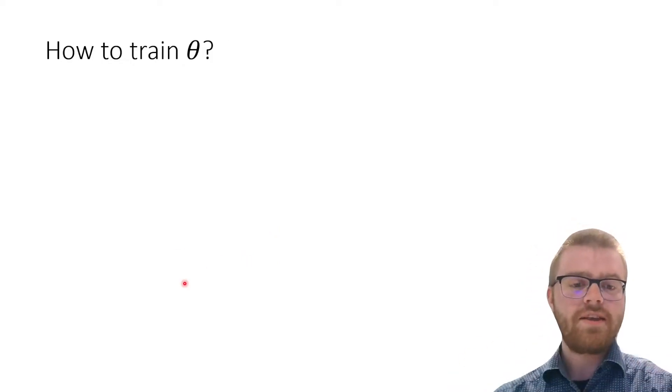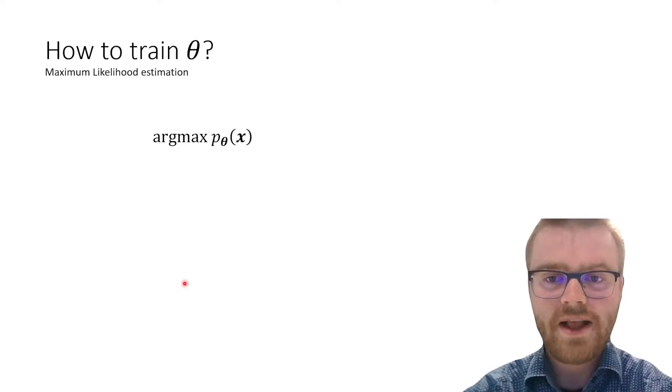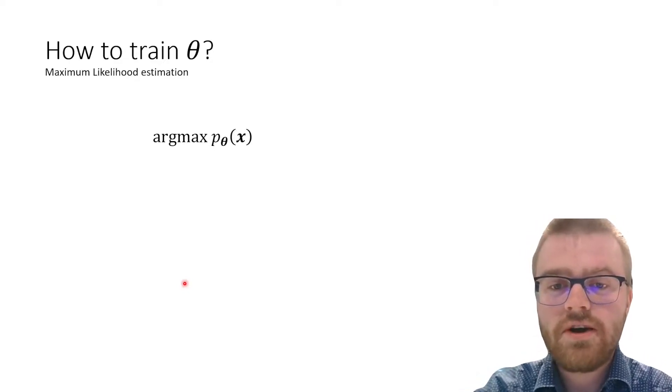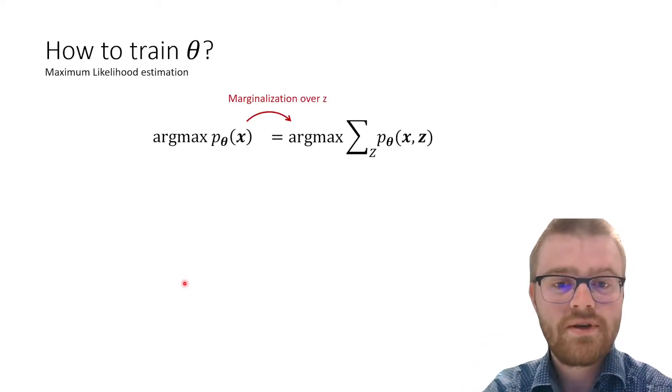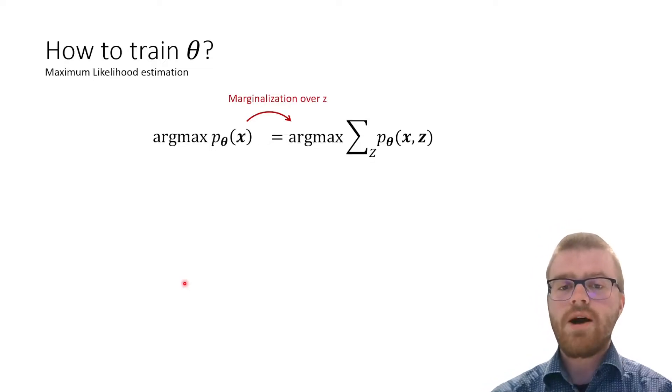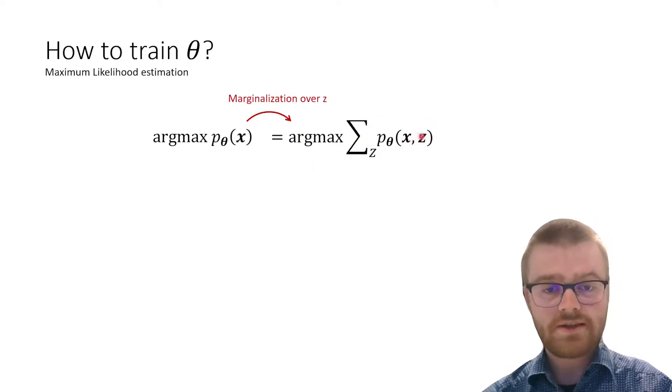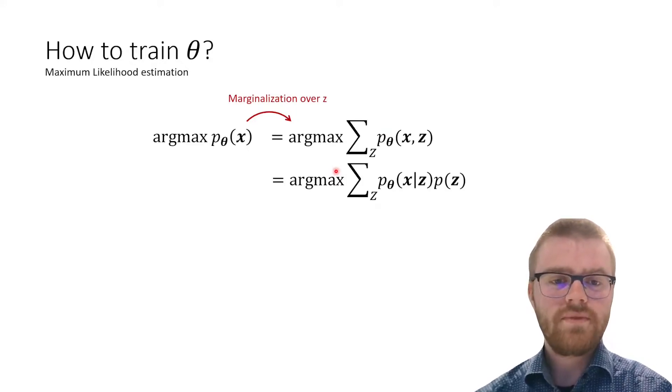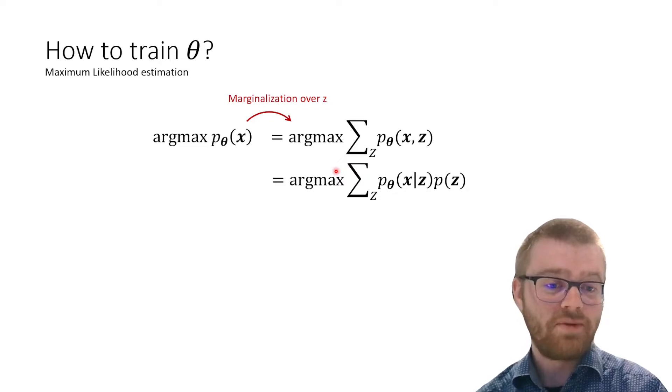Now, how do we train this variational autoencoder? Very important. We can do maximum likelihood estimation. We are going to find the maximum likelihood of our data. First of all, we are going to marginalize over this z. So argmax of this joint distribution of x and z together, and then we sum over z. And then we can create the conditional given and multiplied by the prior.